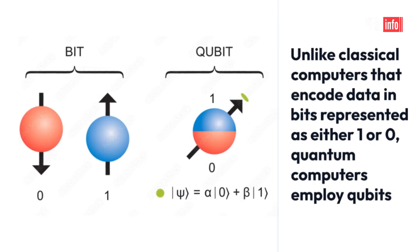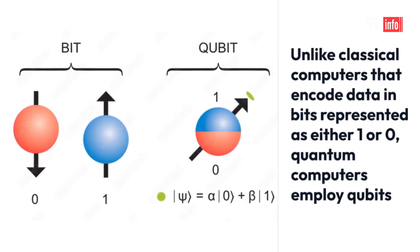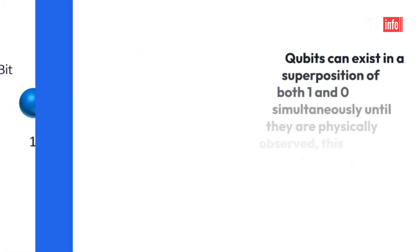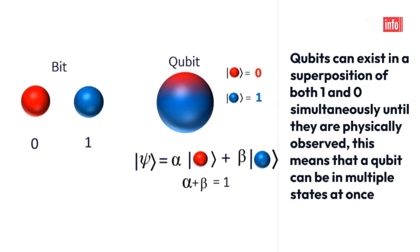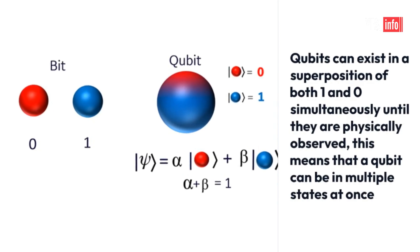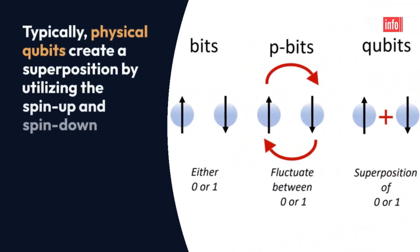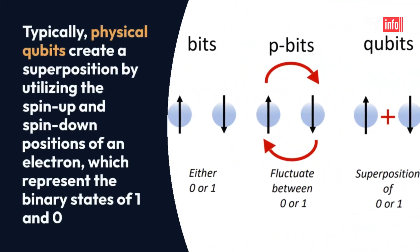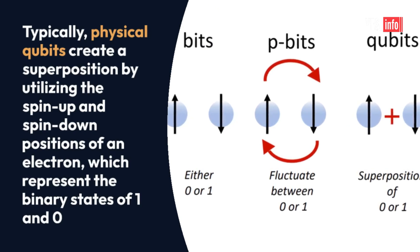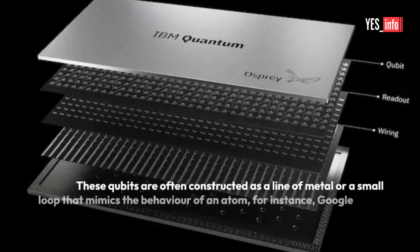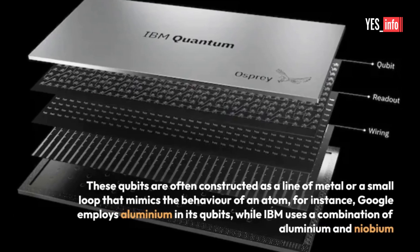Unlike classical computers that encode data in bits represented as either one or zero, quantum computers employ qubits. Qubits can exist in a superposition of both one and zero simultaneously until they are physically observed. This means that a qubit can be in multiple states at once. Typically, physical qubits create a superposition by utilizing the spin-up and spin-down positions of an electron, which represent the binary states of one and zero.